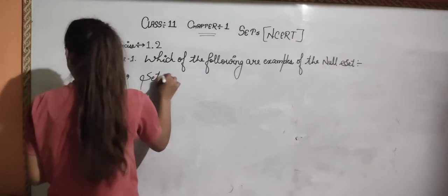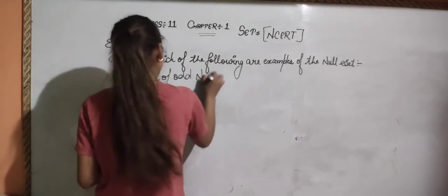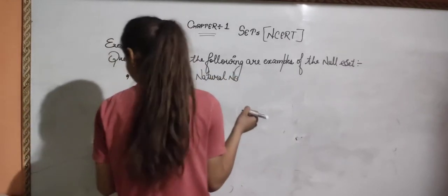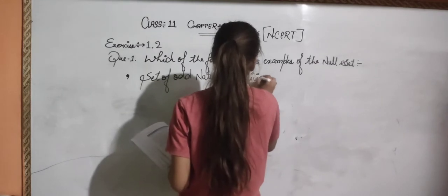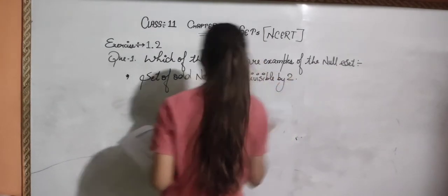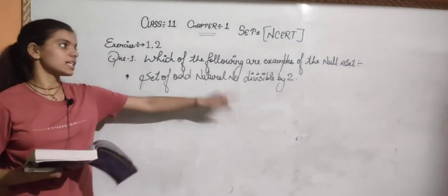Set of odd natural number divisible by 2. Now, let me tell you that this means that any odd number divisible by 2 is null set.